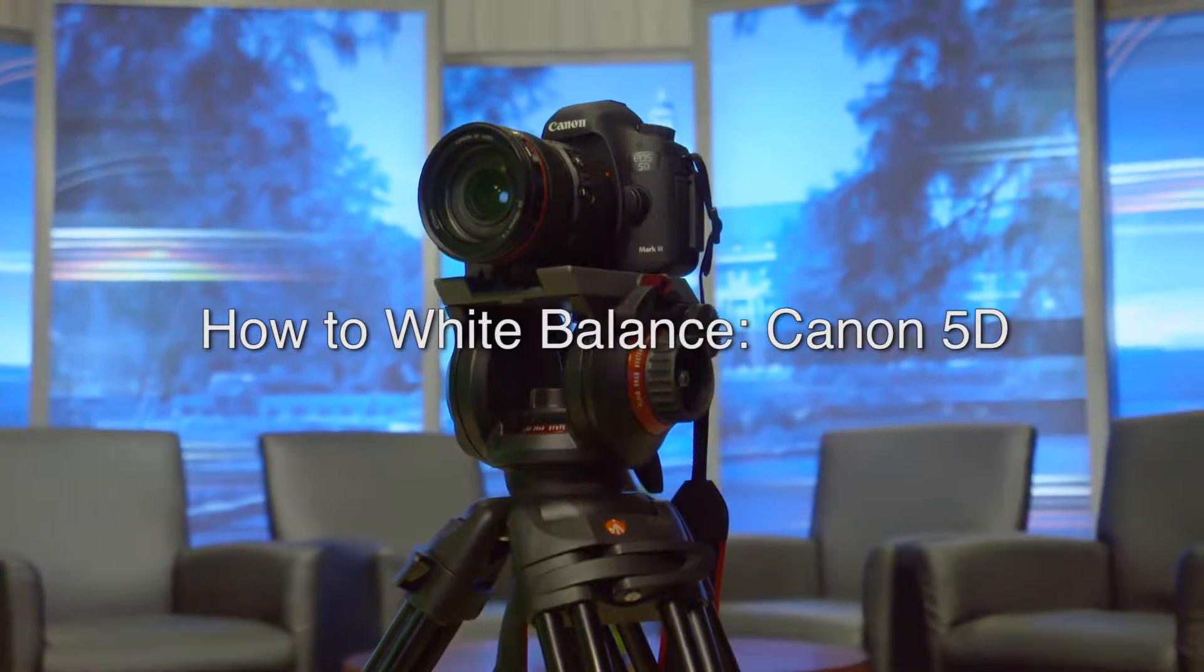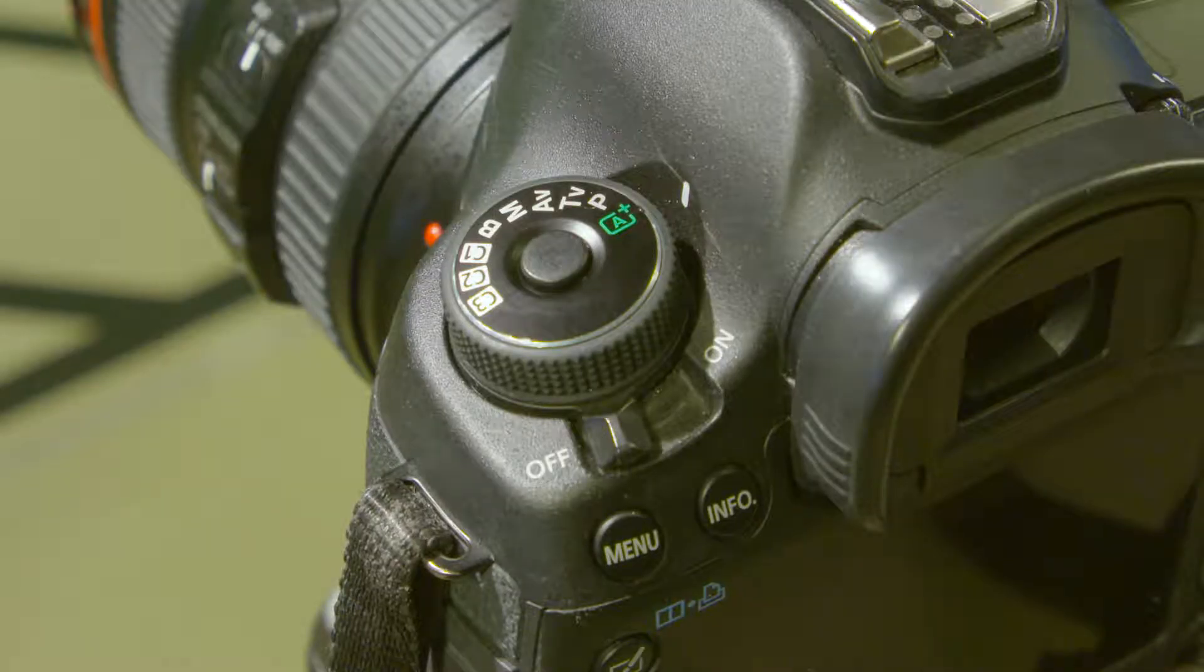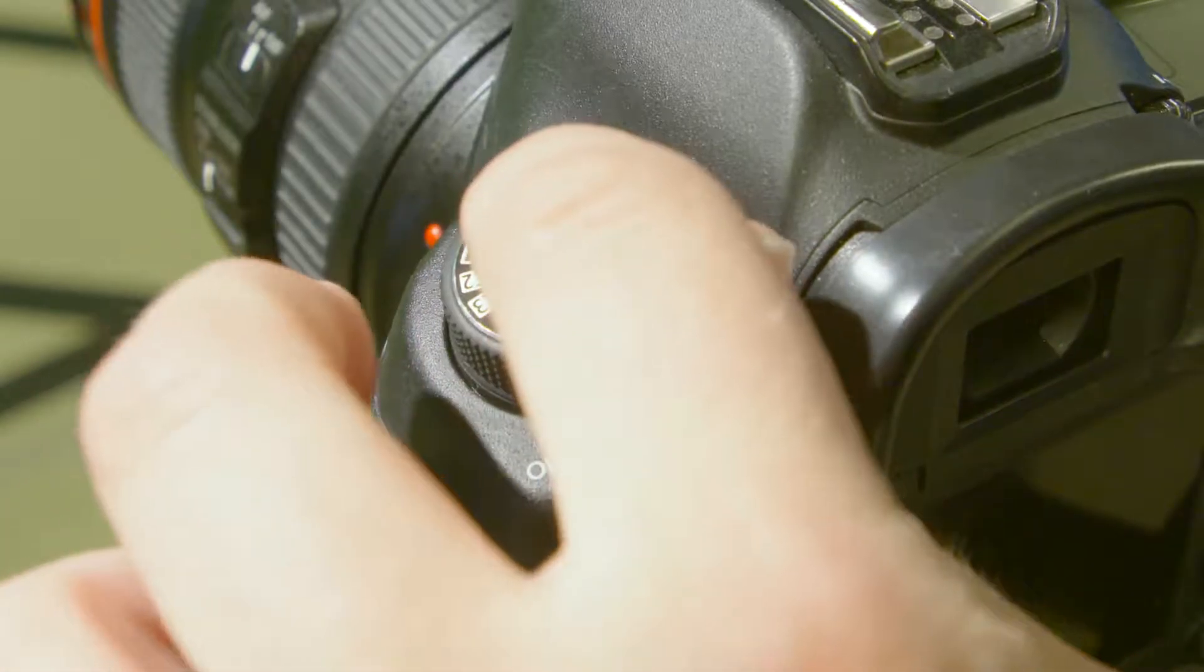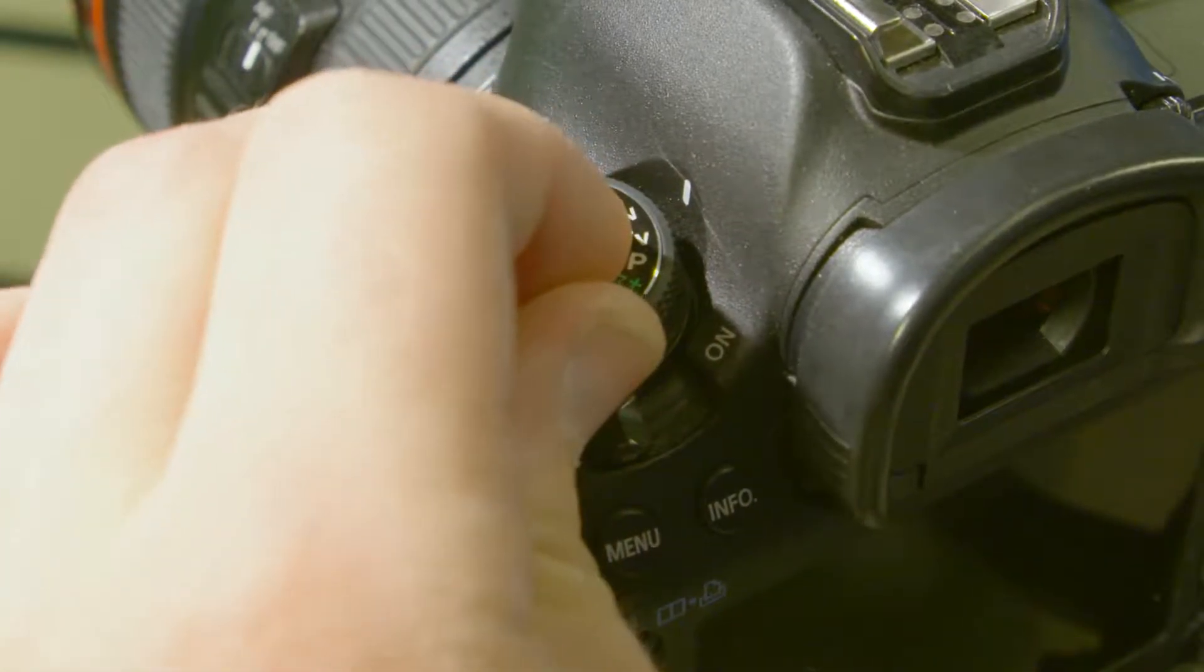How to White Balance a Canon 5D Camera. First, make sure your camera is set to manual. To do this, push in the button on the top left of the 5D and spin the wheel to the letter M.